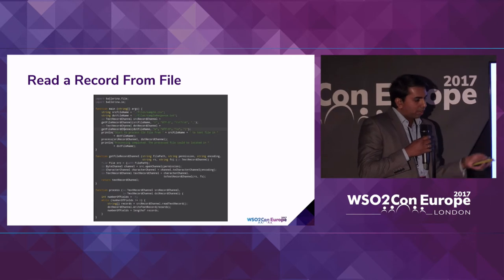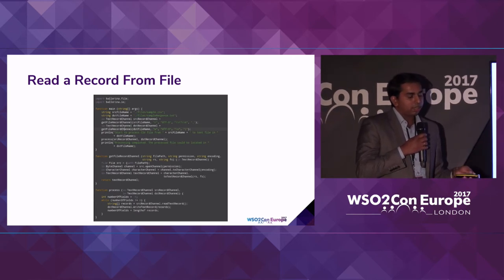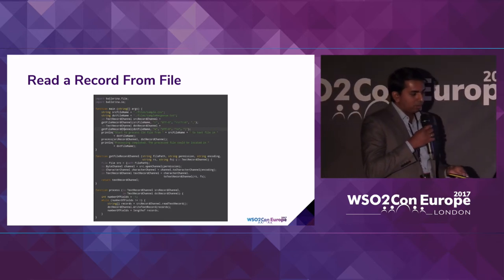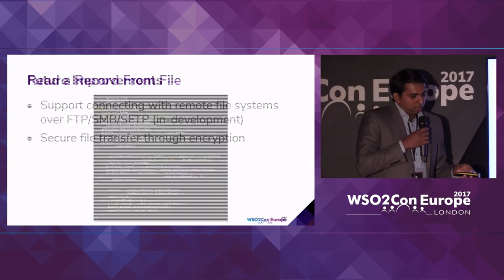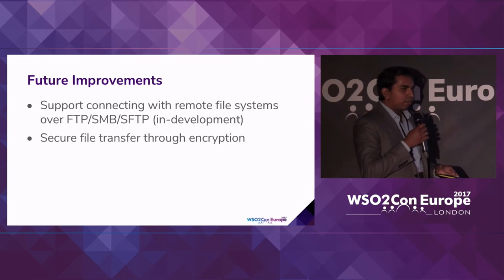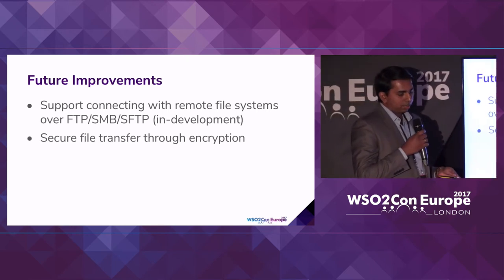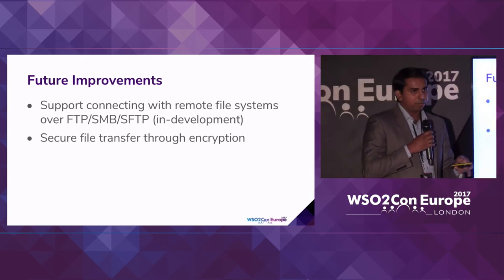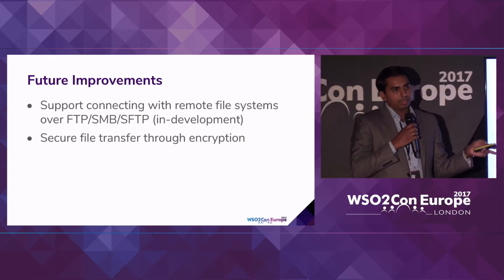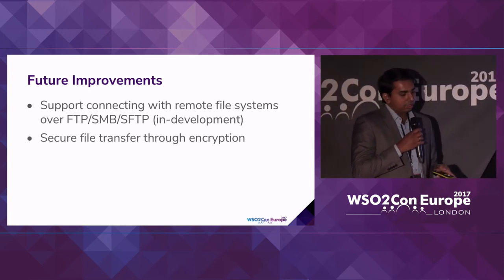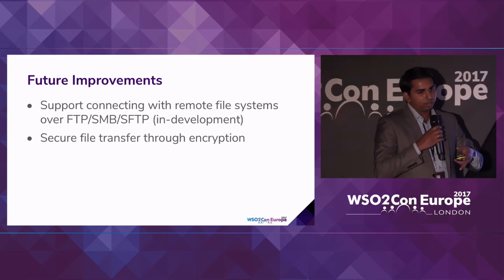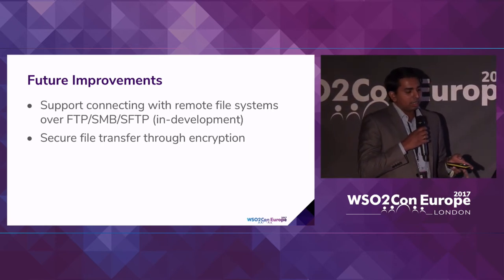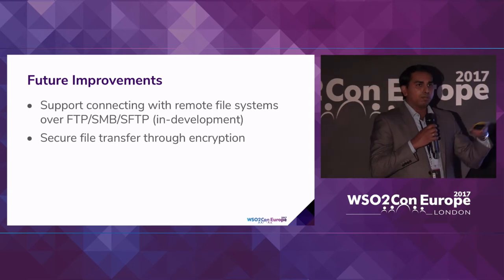You can also read the file at the record level. This is another example available on the Ballerina by Example website. As future improvements, we are working on supporting connections to remote file systems over different protocols like FTP, SMB, and SFTP. We had a connector in the past but due to this new API design we are rewriting it, and are currently working on implementing these file-based capabilities to connect to remote systems.